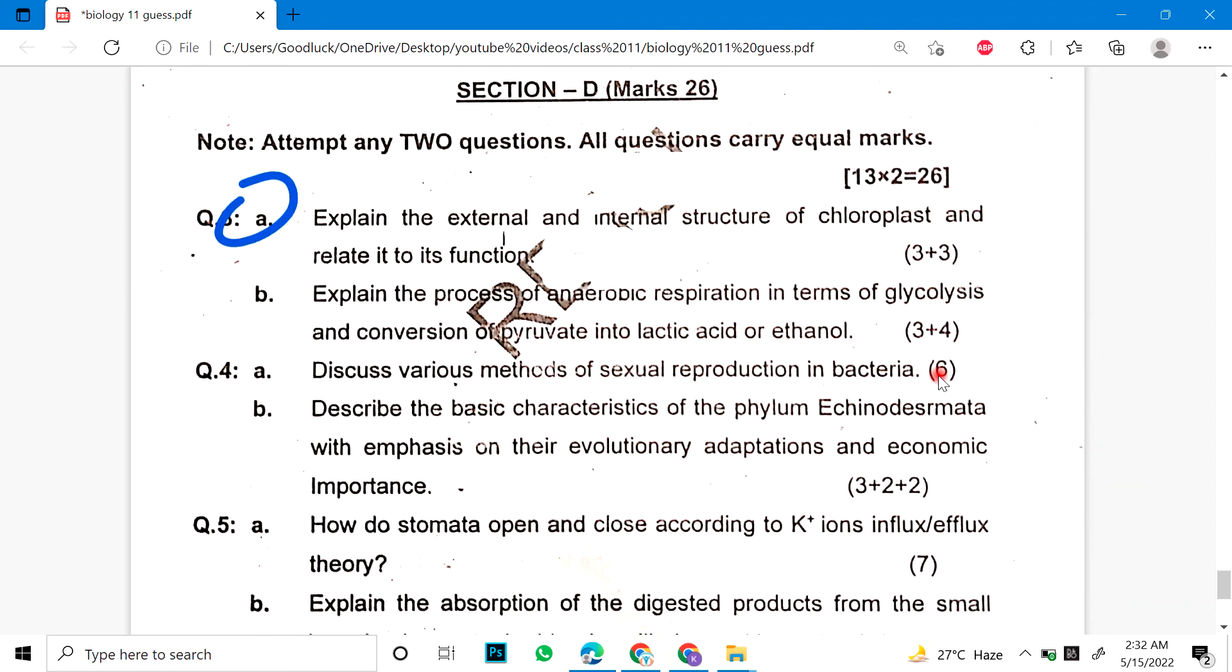Long question, Section D. Question number 3 part A: Explain the external and internal structure of chloroplast and relate to its function. Part B: Explain the process of anaerobic respiration in terms of glycolysis and conversion to lactic acid or ethanol.